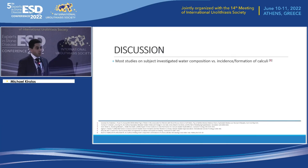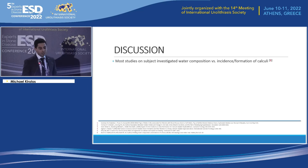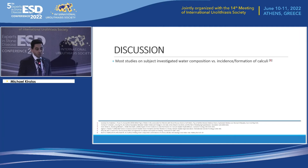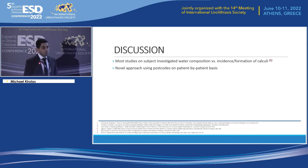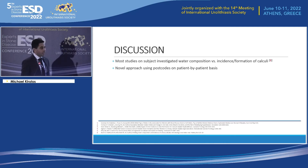To date, most studies looking at the relationship between drinking water and urinary tract stone disease have focused on incidence or the formation of calculi. Few have looked at the actual relationship to the composition of urinary tract calculi. As far as we're aware, the approach we used — determining water quality and comparing it to calculi on a case-by-case basis using patient postcodes — is new.